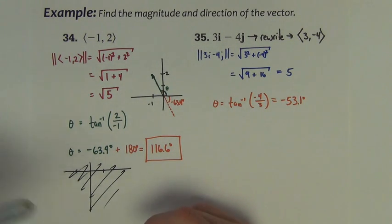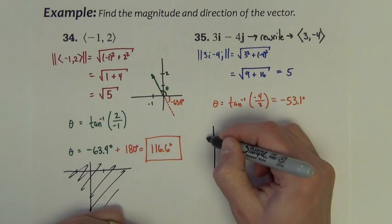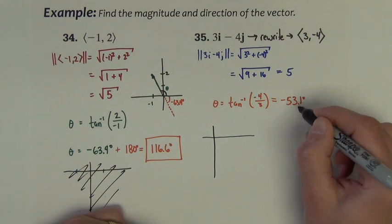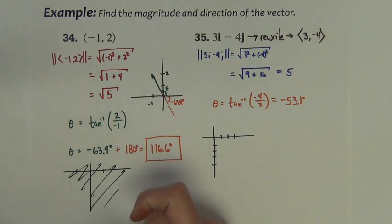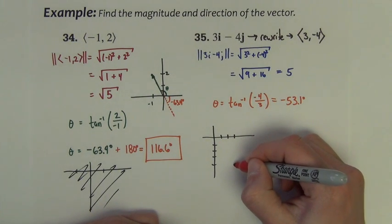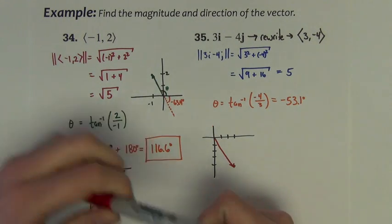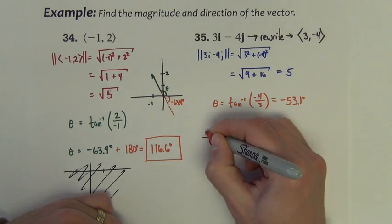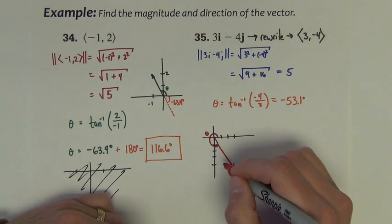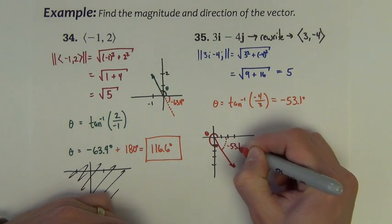Well now we should check a graph, whether it be a mental check. We should check a graph and see if this number we have makes sense to the actual problem. So our vector, (3, -4), goes this direction to (3, -4). The angle that we want is this angle. We want the positive angle made with the x-axis. The angle that we got was that angle.